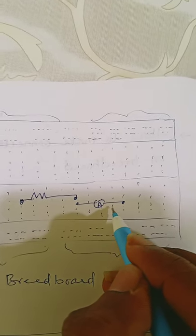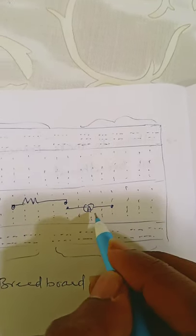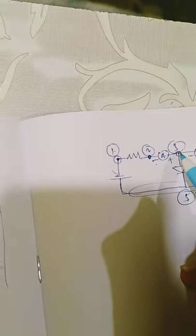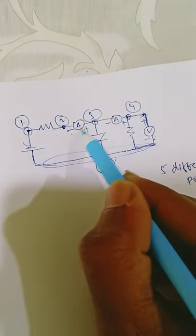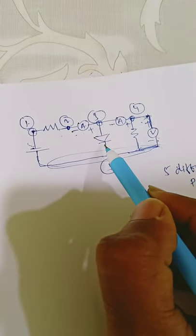The other side of the ammeter can be connected to a different potential — it should be different from node 2. At potential node 3, you can see three different elements: the ammeter, another ammeter connection, and the diode. Let's connect the diode here.